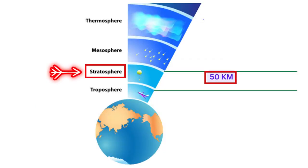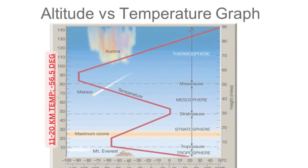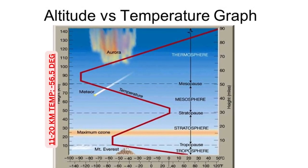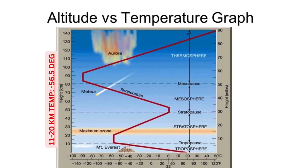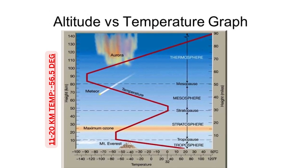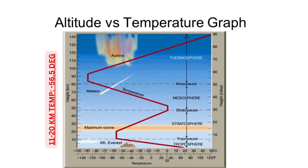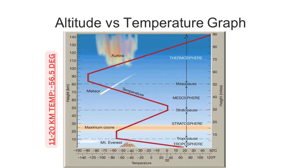Next is stratosphere. Stratosphere extends from tropopause up to a height of 50 km. From 11 to 20 km, the temperature is fixed at minus 56.5 degrees Celsius, and thereafter it starts increasing slowly with increase in height. It is a very stable region with very low humidity and almost no weather.